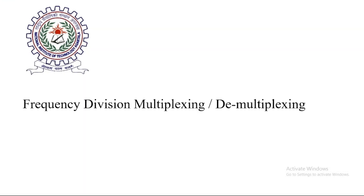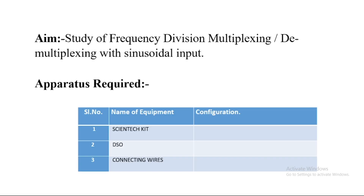Hello everyone, today in this video I am discussing frequency division multiplexing and demultiplexing. In this experiment, our main objective is to study frequency division multiplexing and demultiplexing of sinusoidal input. To perform this experiment we need a scientific kit and a DSO — Digital Storage Oscilloscope — to see the output of different signals and measure the frequency.